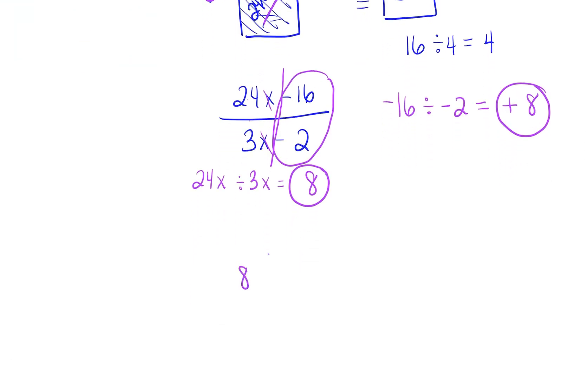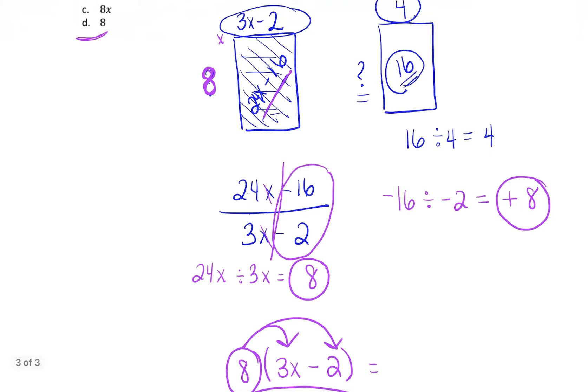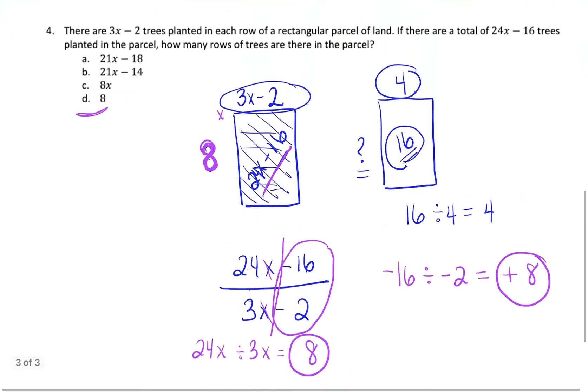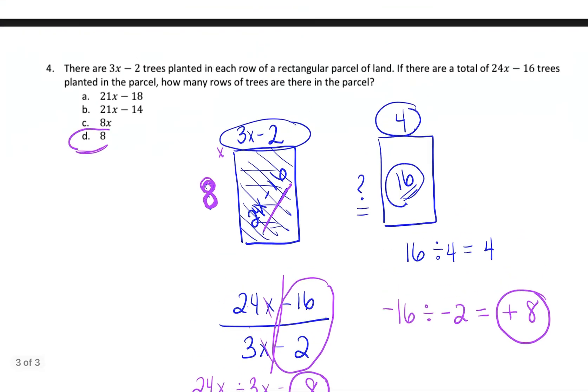So let's go ahead and see if this works out. Let's see if we have found 8 as our value, if 8 times 3x minus 2 is equal to 24x minus 16. So we're going to do 8 times 3x minus 2, and we're going to distribute the 8. So we're going to do 8 times 3x. So 8 times 3x is 24x, and then 8 times negative 2 is negative 16. Look at that. We got 24x minus 16. So our value of the number of rows on this rectangular parcel of land is 8 right here.